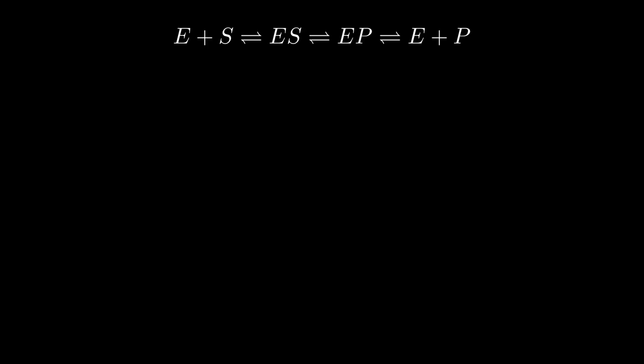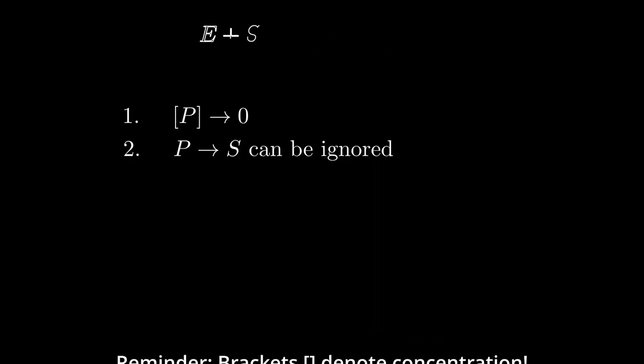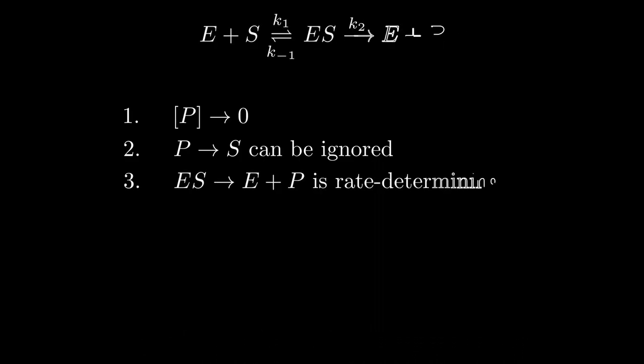To make our lives easier, we can make some reasonable simplifications and assumptions about the reaction. Firstly, since we are specifically looking for the initial rate of the reaction, it is implied that the reaction has just started. The concentration of the product as a result is negligible. Using this, we can reason that the reverse reaction P to S can be ignored, as well as that the product-forming step is rate-determining.